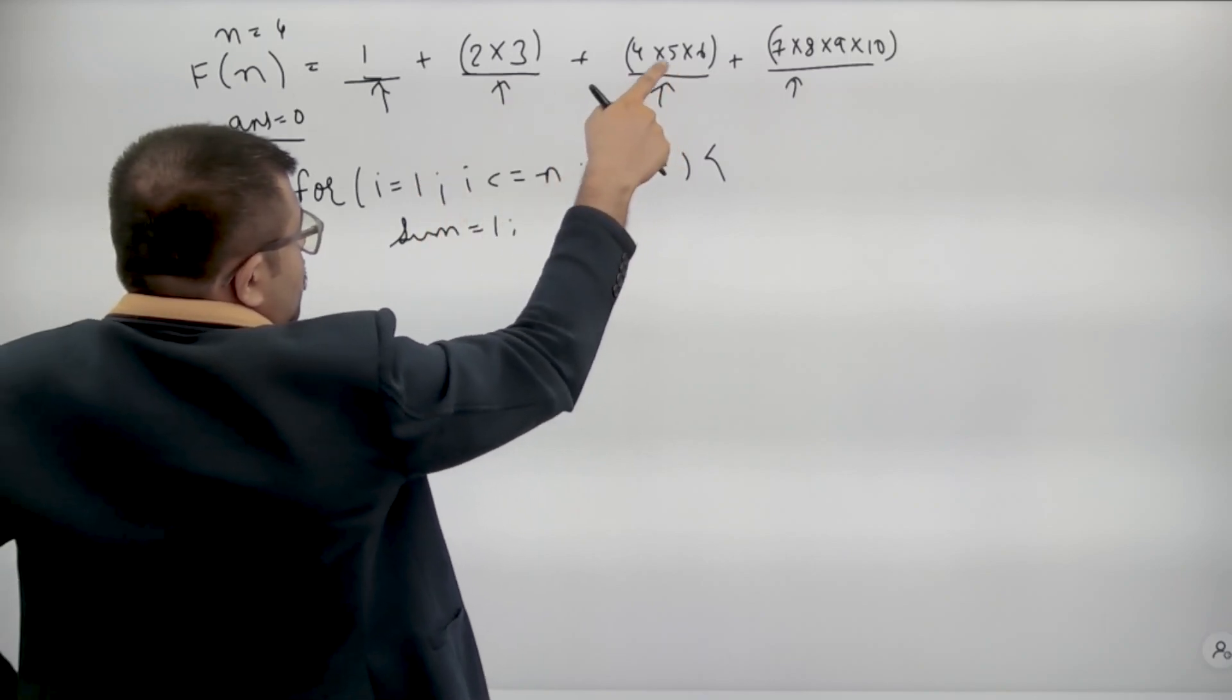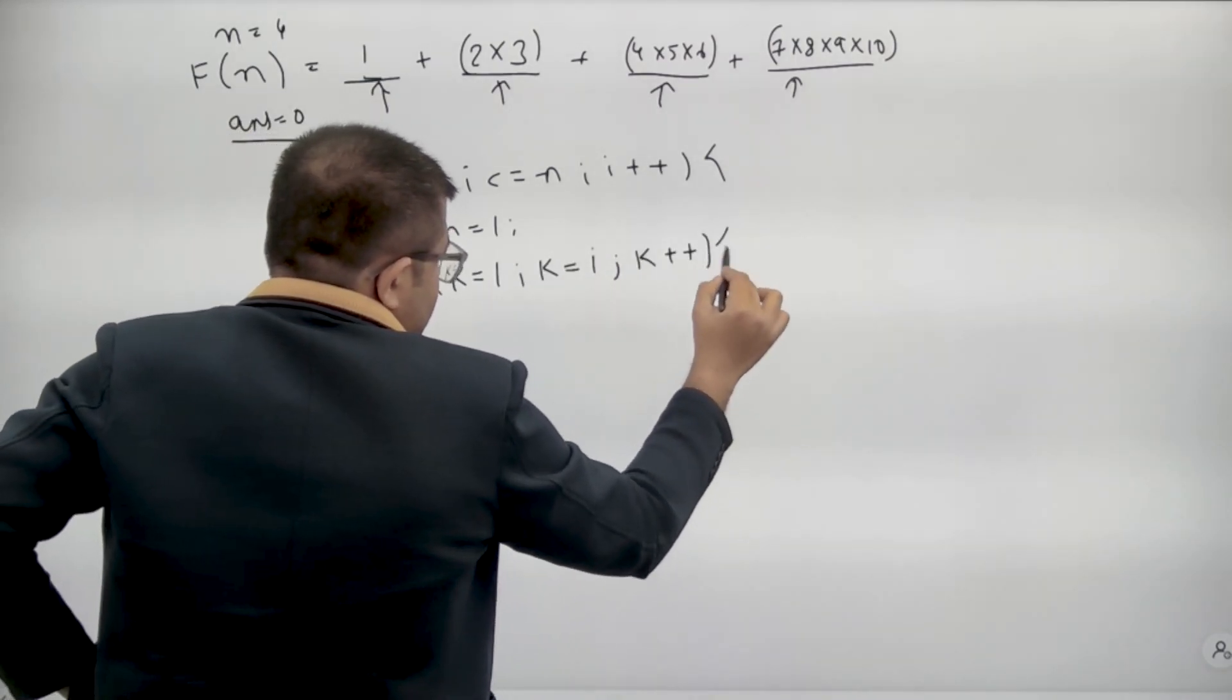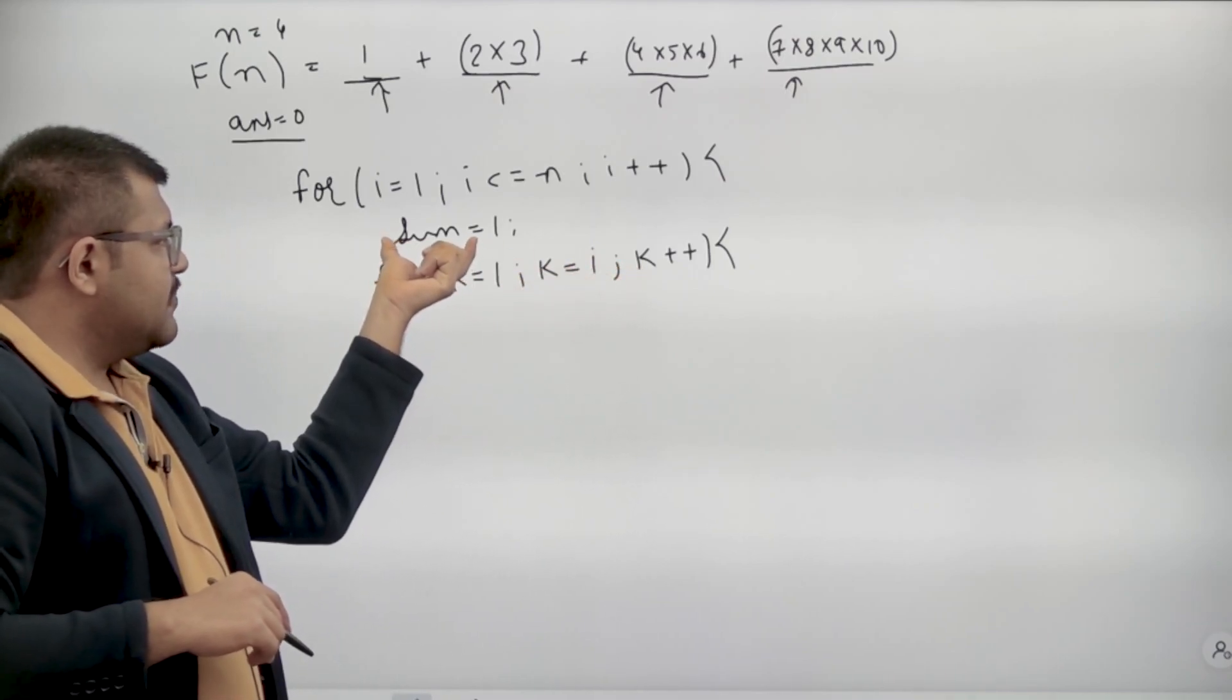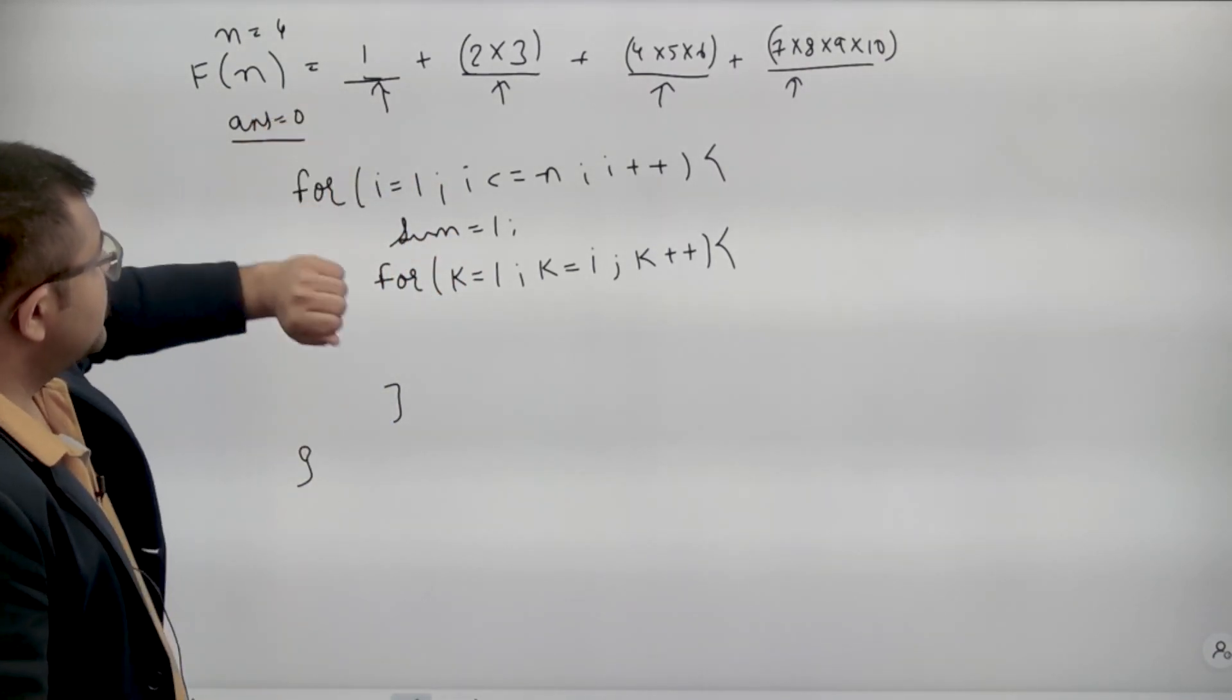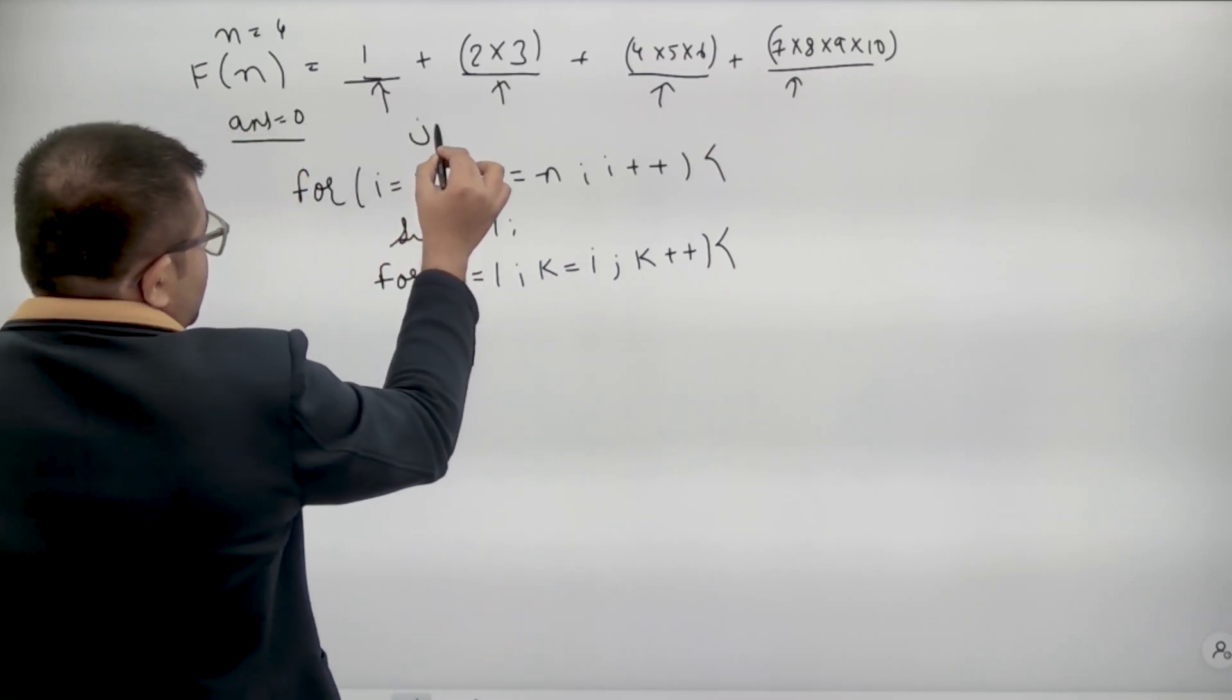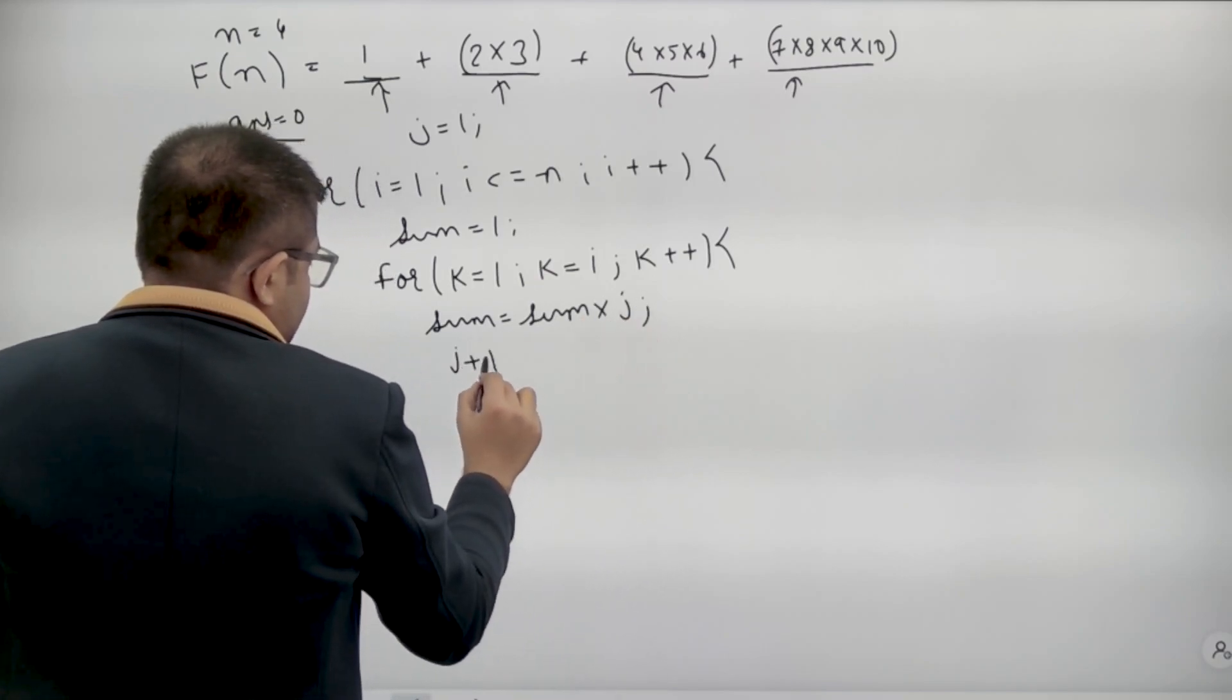Now the ith term contains the product of i number of elements. So can I say for k equals to 1, k is less than equal to i, k plus plus. Here I will multiply the respective terms in sum because this for loop is of i size. So i number of elements will be multiplied with my sum variable and then I will add it to my answer. Now what are the elements? Here it is 1, then it is 2, 3, then it is 4, 5, 6, then it is 7, 8, 9, 10. So it is going in consecutive order. So I can take a variable j here, which every time increases by 1. So sum equals to sum into j and j plus plus.